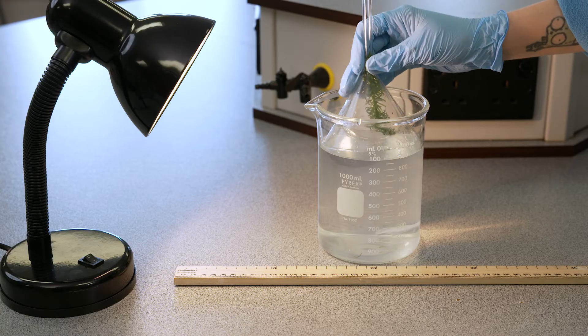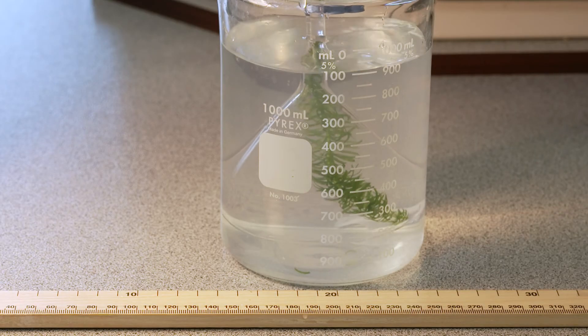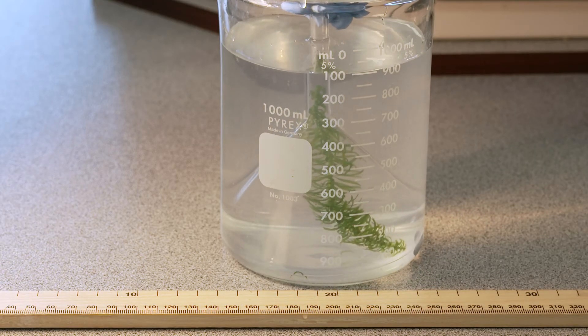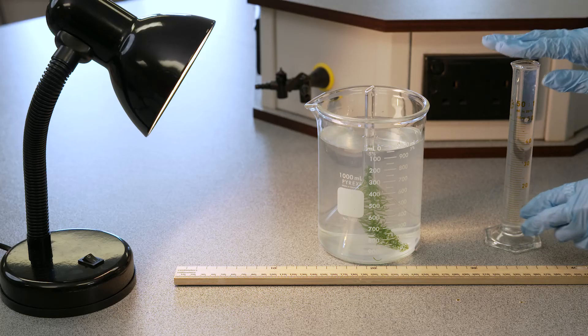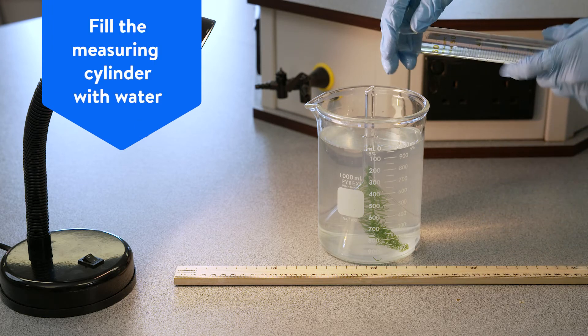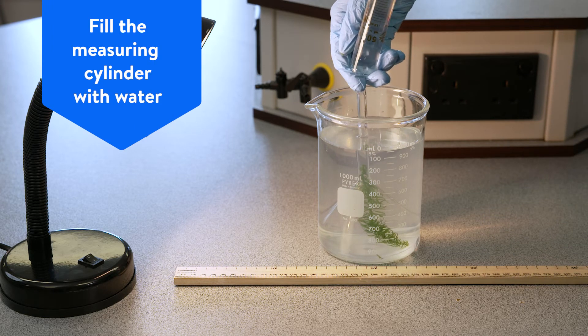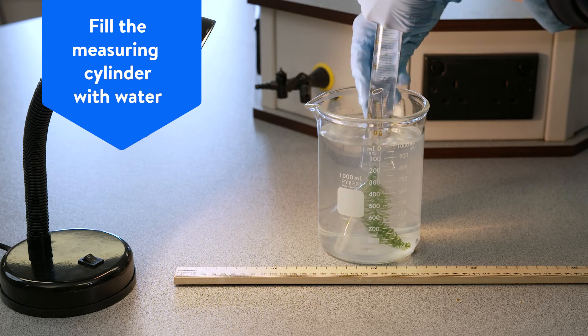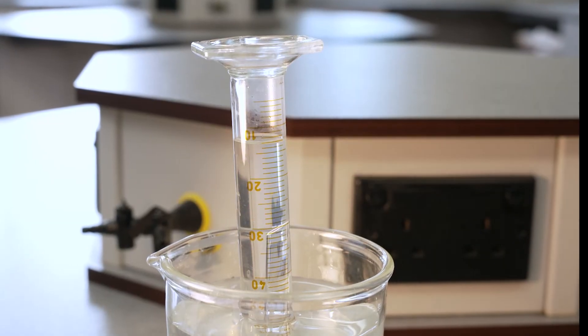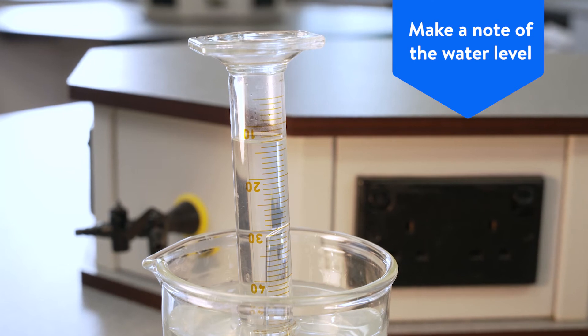Fill the measuring cylinder with water and carefully position it over the stem of the filter funnel. Make a note of where the water level is in the cylinder.